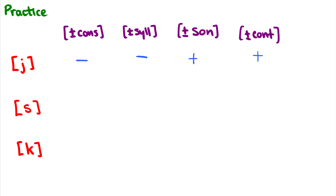What about /s/? It is consonantal. Is /s/ syllabic? No. Is it sonorant? It's an obstruent, so no. Is it continuant? /s/ — yes, it is continuant. What about /k/? /k/ is consonantal, yes. Is /k/ syllabic? No, it's a consonant and an obstruent. Is it sonorant? No, it is an obstruent. Is /k/ continuant? No, it is not — there's a full closure. So those were some features for three sounds. Of course, we could also discuss plus/minus approximant and plus/minus delayed release for each.